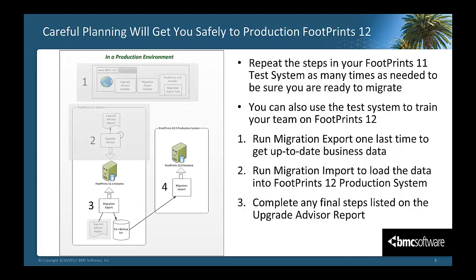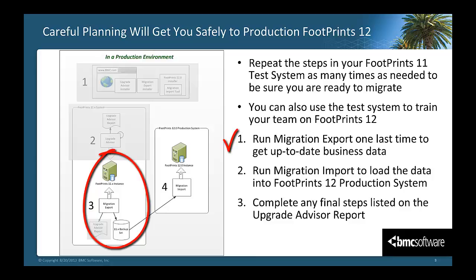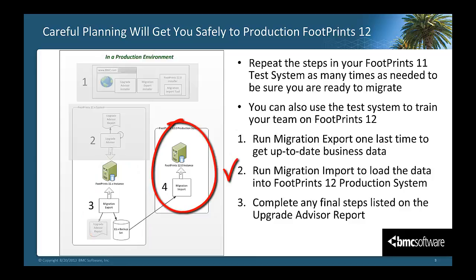Now that you have tested the migration and you have a complete migration plan, the next step is to run the migration in the production environment. Migration in a production environment consists of three main steps. We don't have to run the Upgrade Advisor anymore since at this point your migration plan will be completed and tested. So the first step is to recreate your backup set. The next step is to import the backup set into your Footprints Service Core 12 production instance. And for the third step, you will complete any final steps listed on the Upgrade Advisor report.